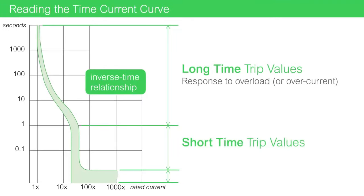This brings us to short time trip values. This range represents one of two ranges of the magnetic trip response due to short circuits.